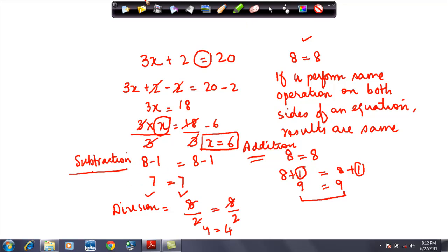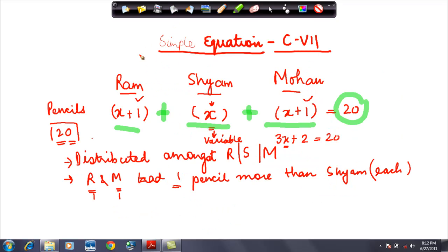So now let me just put this into the equation. Putting these values to the equation, Ram had X plus one pencil, which means six plus one is equal to seven pencils. Sham had X pencils: six. Mohan X plus one: seven. So is the value of the answer correct? If I add seven plus six plus seven, I get 20. And what was the second condition? Ram and Mohan had one pencil more than Sham. So Ram has seven, Mohan has seven, Sham has six. So even this value is correct.